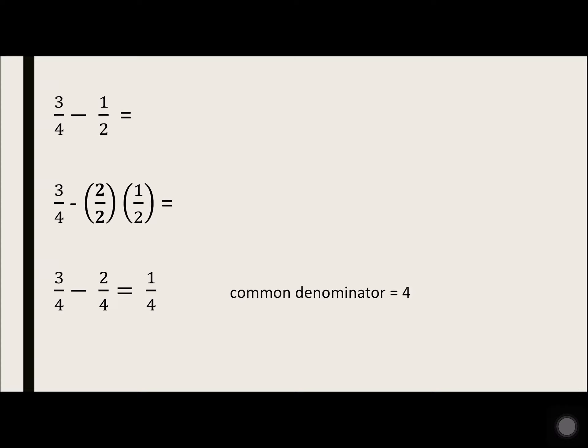3 over 4 minus 1 over 2. Both of those can go into 4. 2 goes into 4, so the 3 over 4 stays. 1 over 2, you need to multiply it by 2 to get 4.